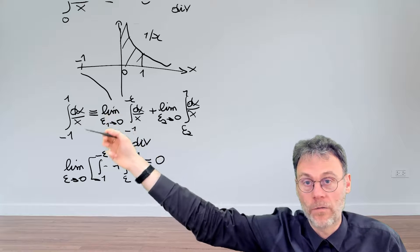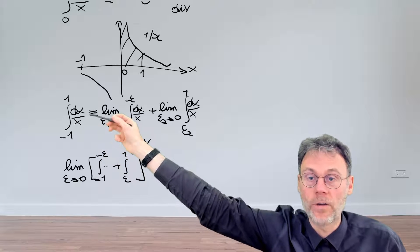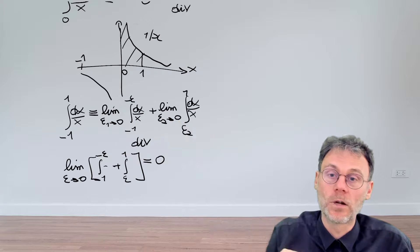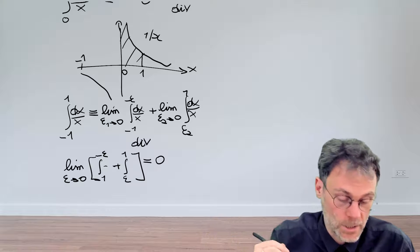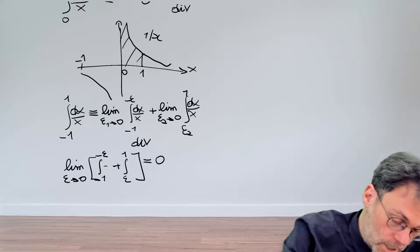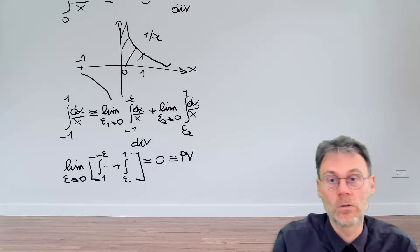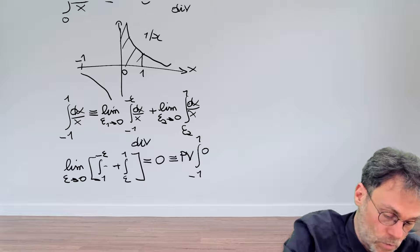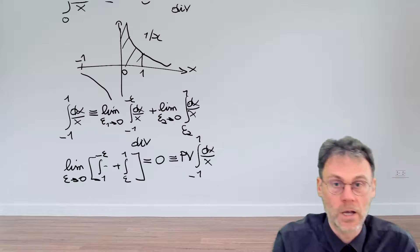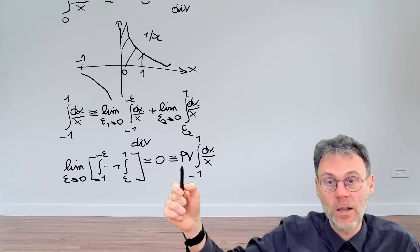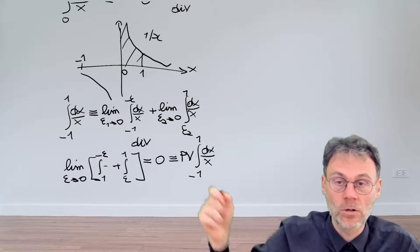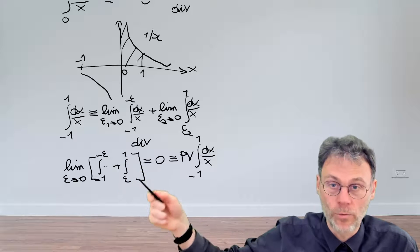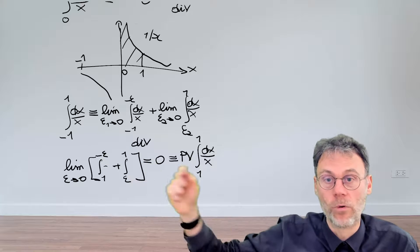Well, we cannot use our conventional definition here of integral because by definition this means two separate limiting integrals. So therefore we need to find a new notation for this, and that new notation is the principal value, which we will denote by this PV here in front of our integral from minus 1 to 1 dx over x. So if you see principal value in front of a certain integral, that means that you only have a single limiting operation where you approach the singularity in a symmetric fashion from both directions.